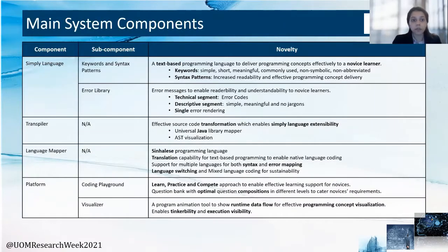Our system has four main components: the Simply language, transpiler, language method and platform. The language itself is a text-based programming language with short and simple keywords and syntax patterns designed for increased readability. The error messages have two segments — technical and descriptive — coming with error codes and simple, useful messages.